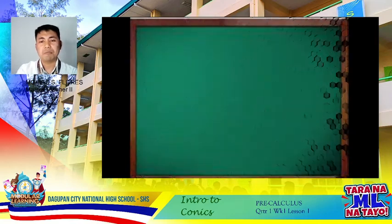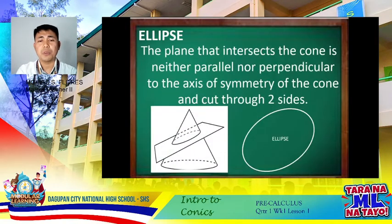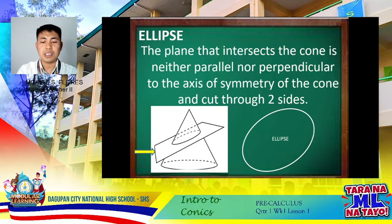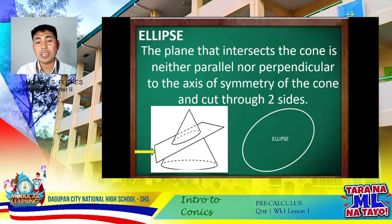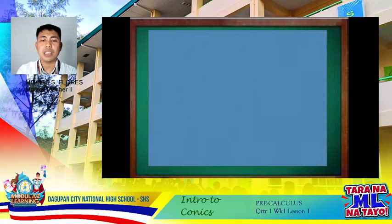An ellipse is formed when the plane that intersects the cone is neither parallel nor perpendicular to the axis of symmetry of the cone, and cuts through two sides. The tilted plane intersects only one cone to form a bounded curve. Compared to the parabola which is unbounded, an ellipse forms a bounded curve.